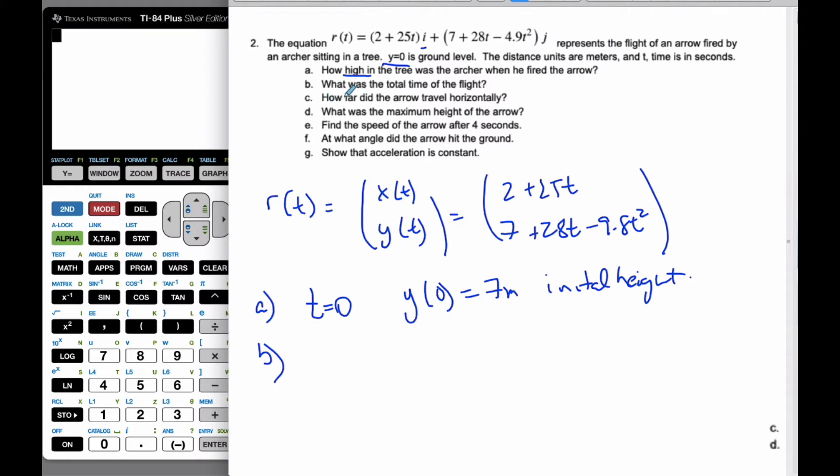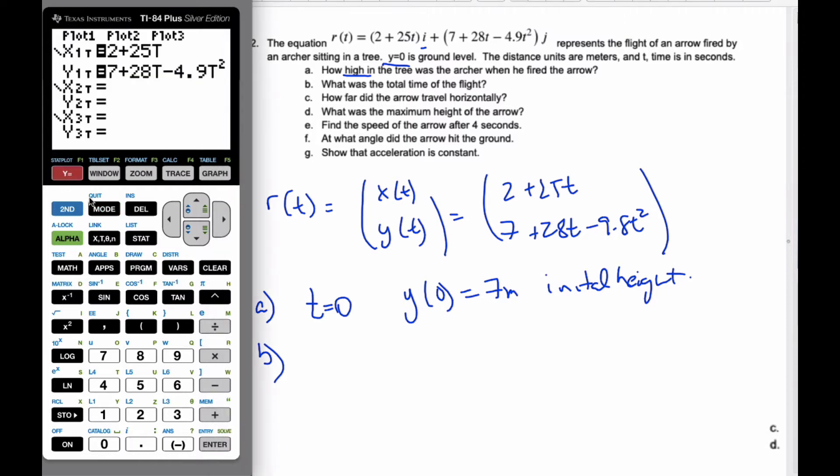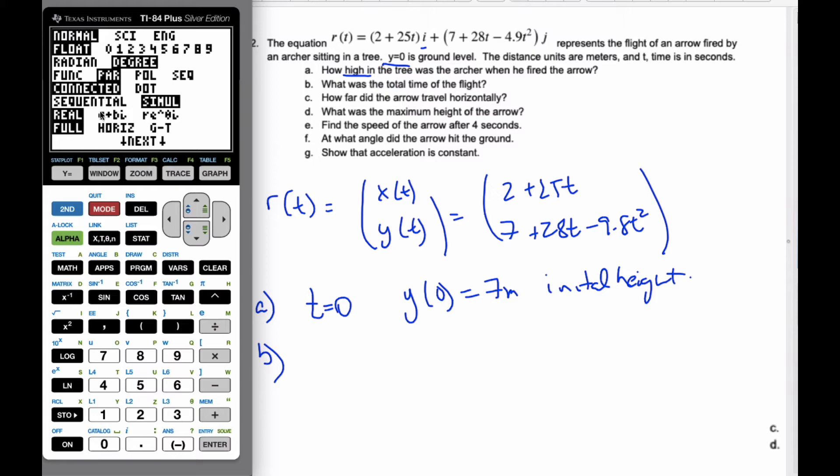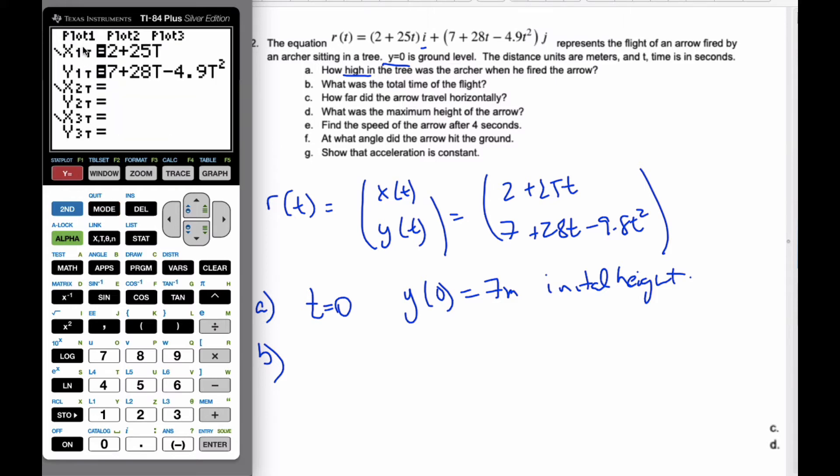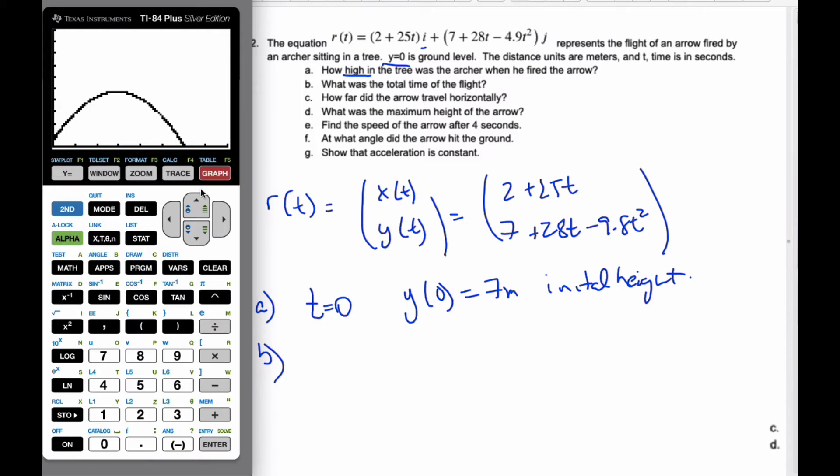When I go to part b, it says what was the total time of flight? I'm going to show in my calculator here, if I go to a new mode called parametric mode, I can put my x and y components in as I've shown here. I've typed it in there and I'm going to graph it. This shows the path of the arrow at various times. I want to know when it was shot and it lands on the ground here. How much time happened?